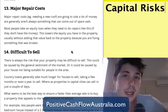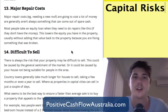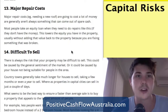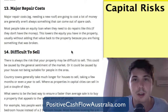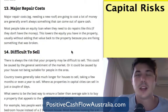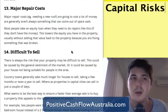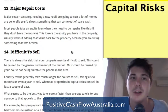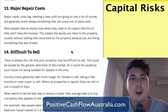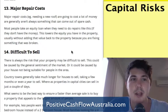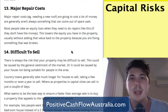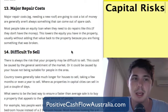Number thirteen is major repair costs. Things like needing a new roof are going to cost a lot of money and generally can't be covered from spare cash. Many people take equity loans for repairs like this, but if you don't have any equity in your property, being able to do these things becomes pretty hard.